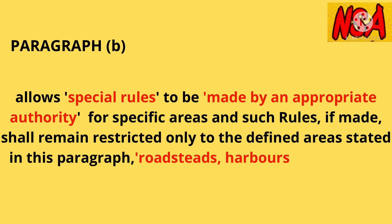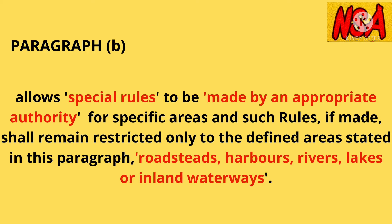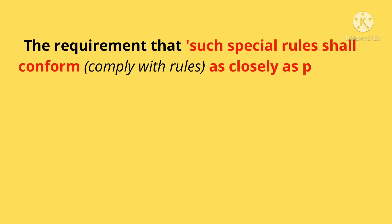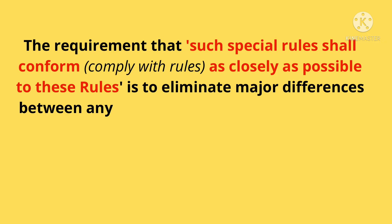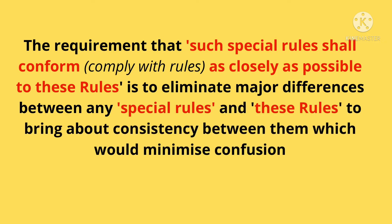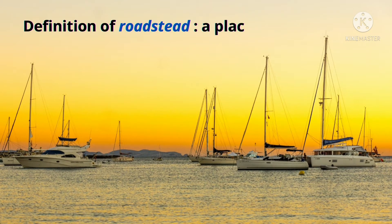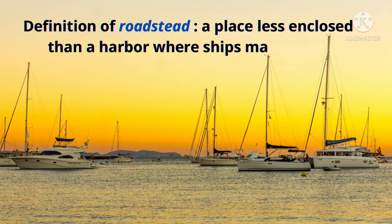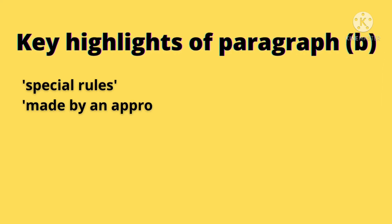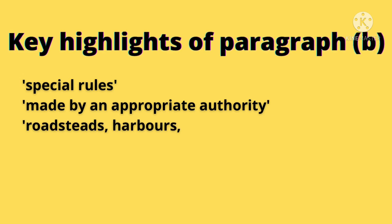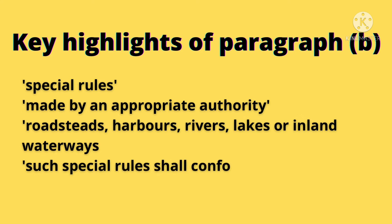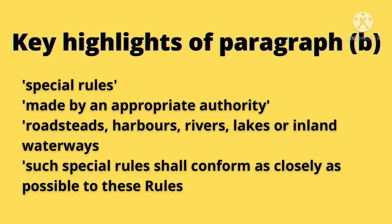Those defined areas are: roadsteads, harbors, rivers, lakes, or inland waterways. The requirement that such special rules shall conform as closely as possible to these rules is to eliminate major differences between any special rules and these rules, to bring about consistency between them, which would minimize confusion. Definition of roadsteads: a place less enclosed than a harbor where ships may ride at anchor. Key highlights of Paragraph B: special rules, made by an appropriate authority, for roadsteads, harbors, rivers, lakes, or inland waterways. Such special rules shall conform as closely as possible to these rules.